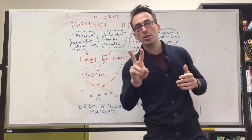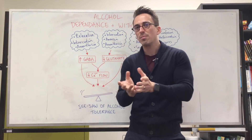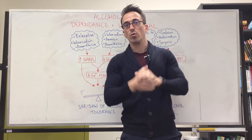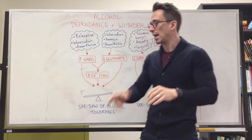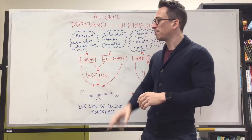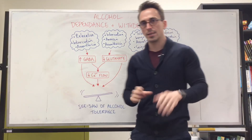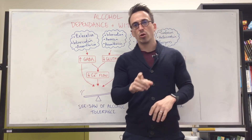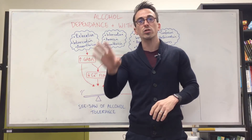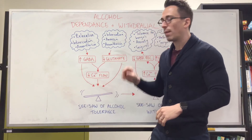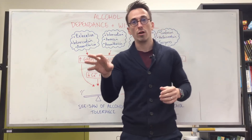There are two major pathways you need to be aware of. They aren't the entire picture, but they're most of the picture when it comes to alcohol dependence and withdrawal. These two neurotransmitter systems are GABA and glutamate. GABA is an inhibitory neurotransmitter, which means when it's released, neurons don't fire off. Glutamate is excitatory — so when it's released, neurons are told to fire off.